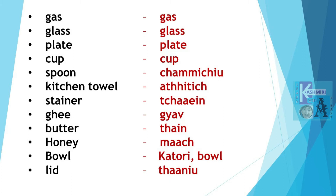Butter is Thany. Thany. Honey is March. March. Small bowl is Katori and the big bowl is Baal. So Katori and Baal. Lid is Thana. Thana.